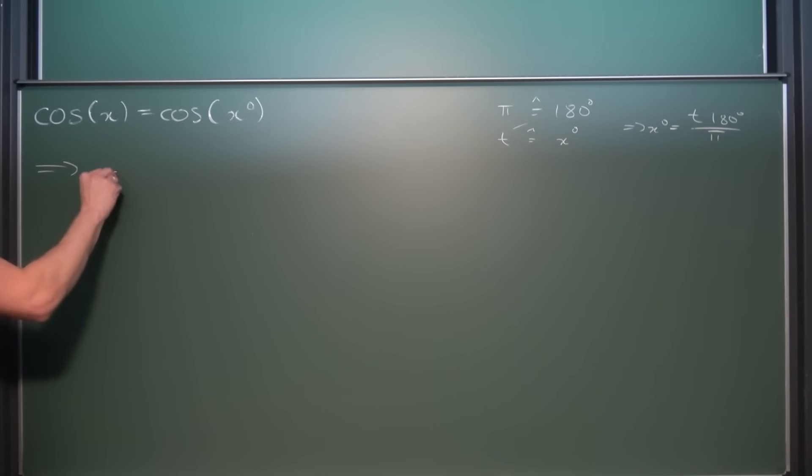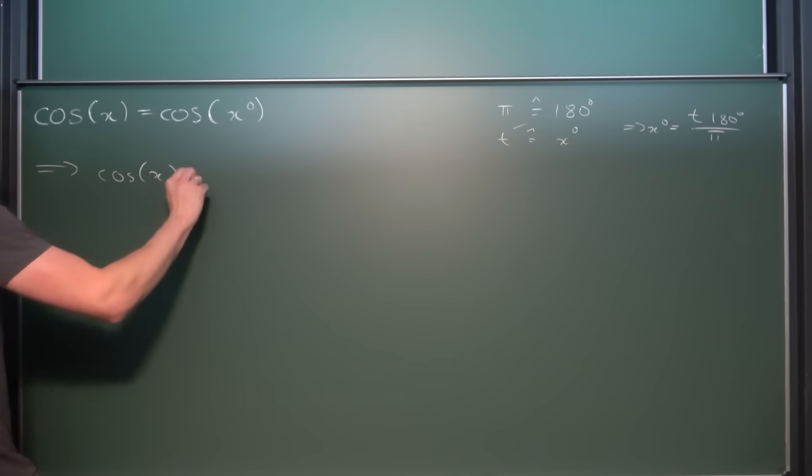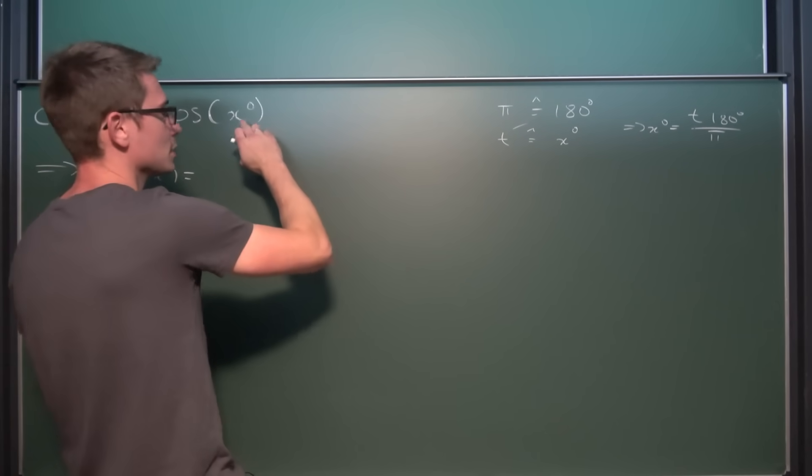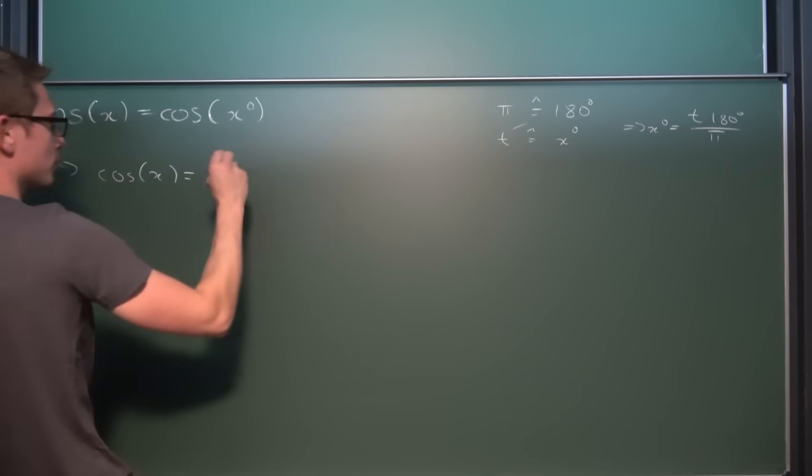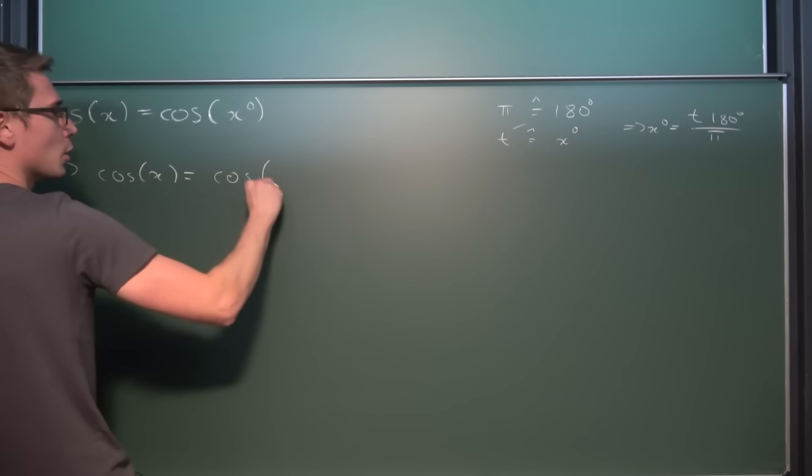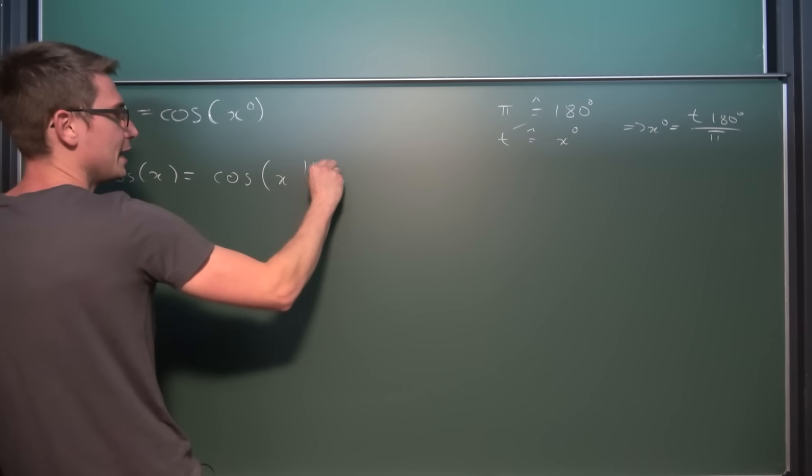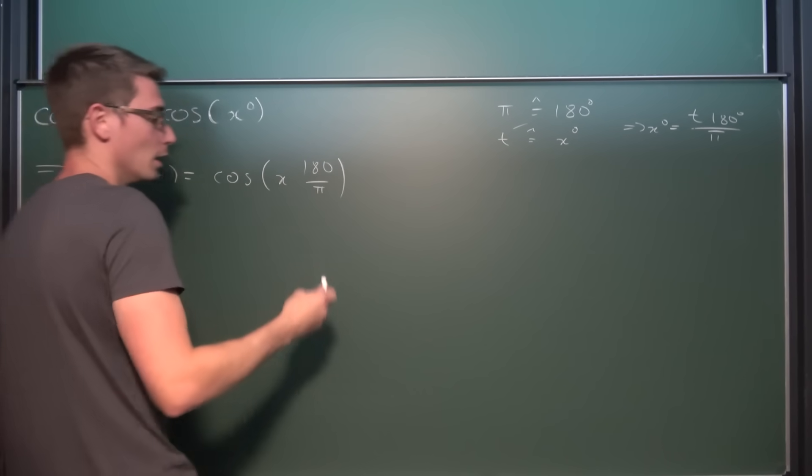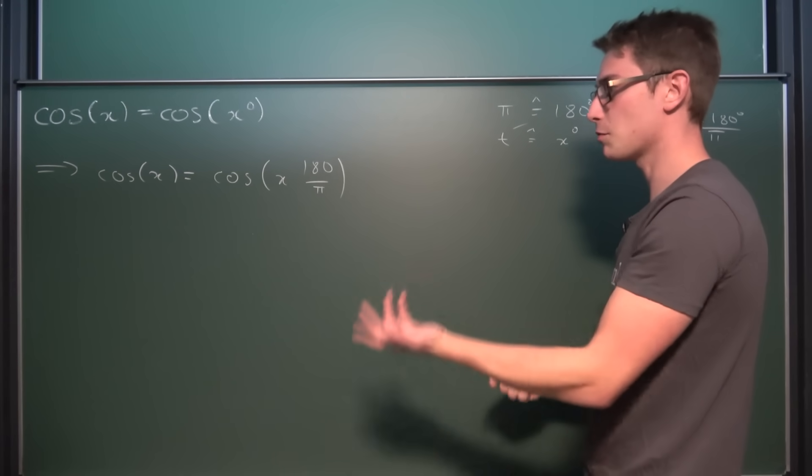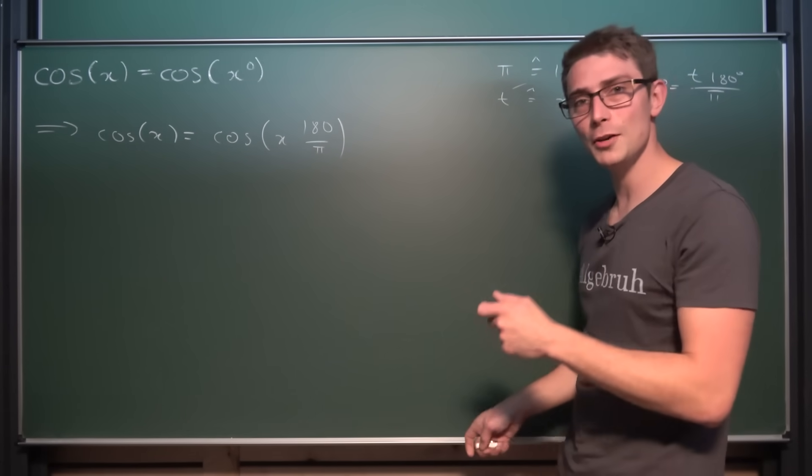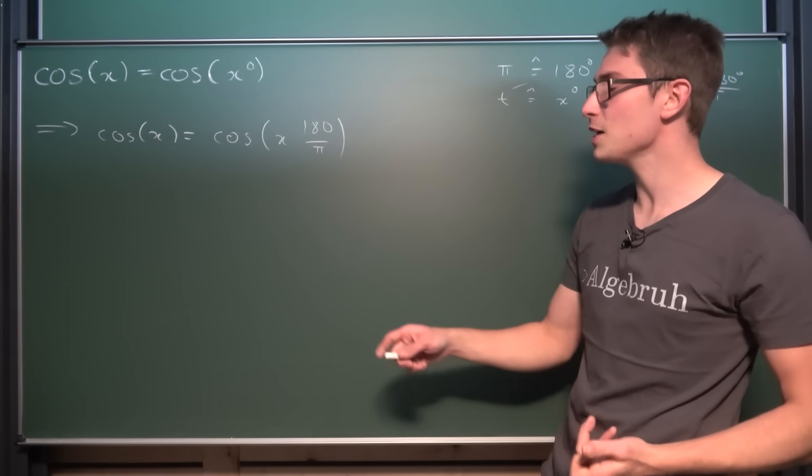And this is how you convert between the two. And this is what we got to apply here, meaning that the cosine of some value x is equal to, now let us use this definition, substituting the x for the t, is equal to the cosine of x times 180 divided by π. And with that out of the way, we can nearly use inverse trigonometric functions. The thing is, the cosine is not bijective over its whole domain.